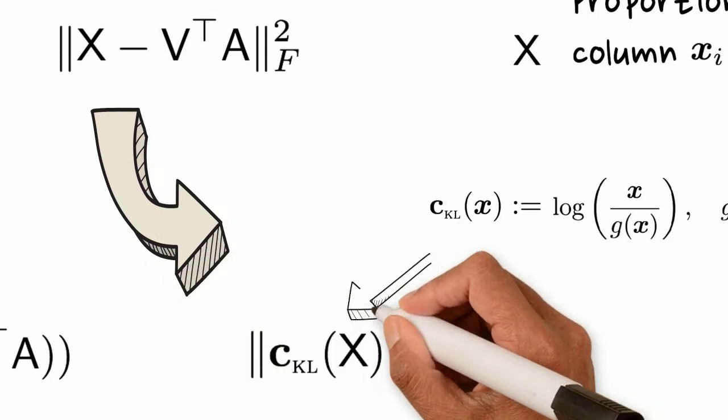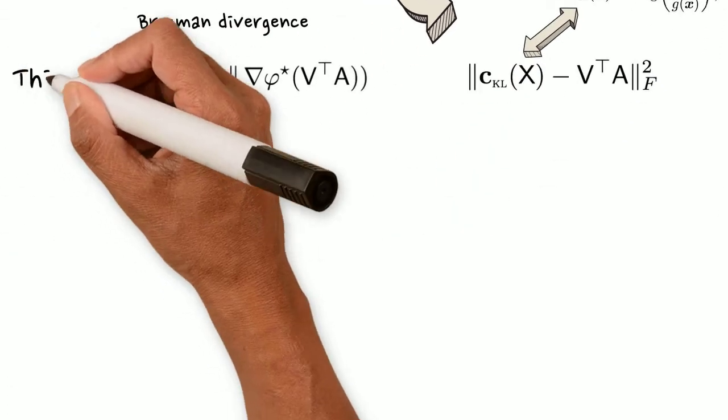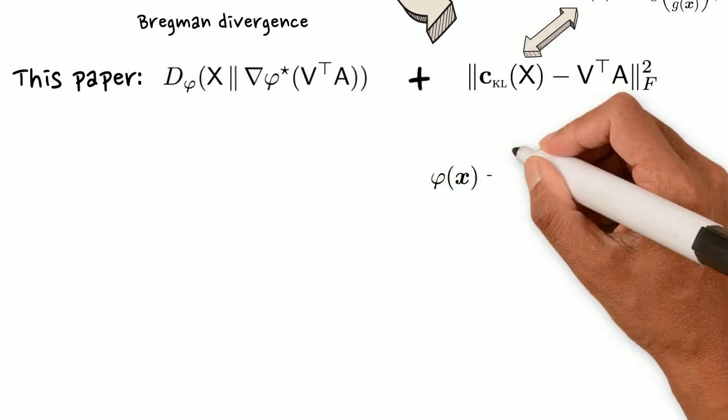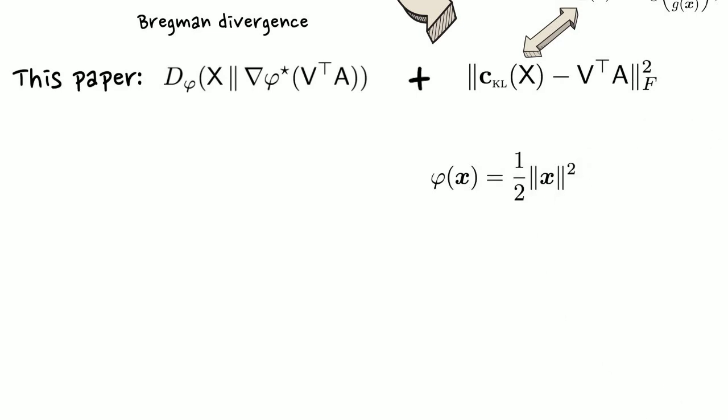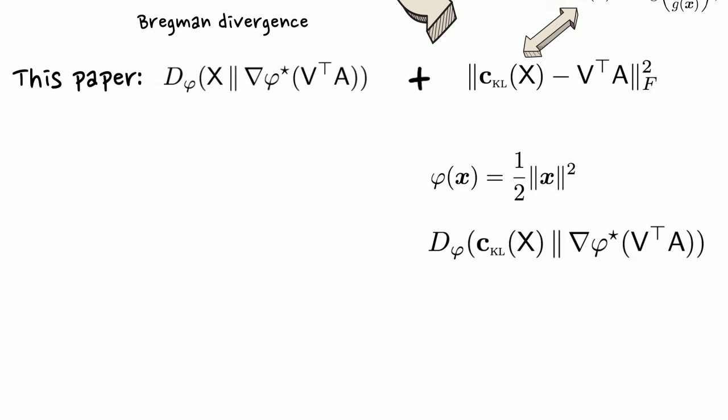PCA for CODA data proceeds by using the CLR data. We propose a PCA method that combines the Exponential Family view and the CLR view. Observe that the squared Frobenius norm is obtained when we use the squared Euclidean distance as the generator of the Bregman divergence.